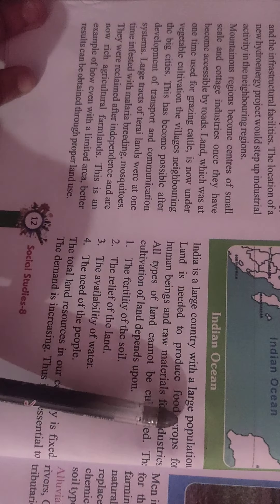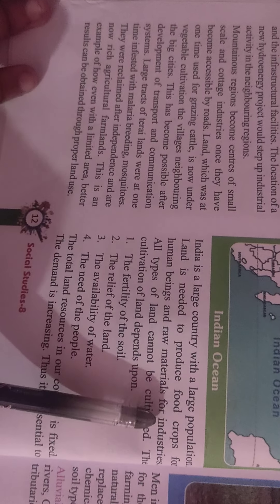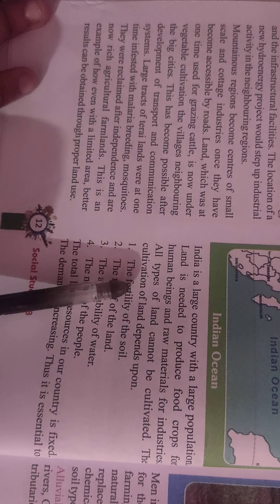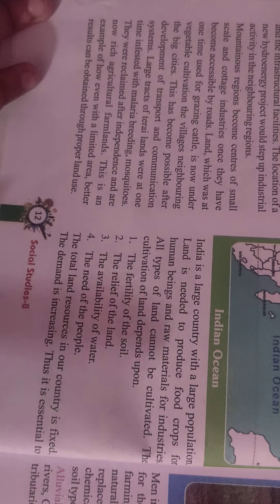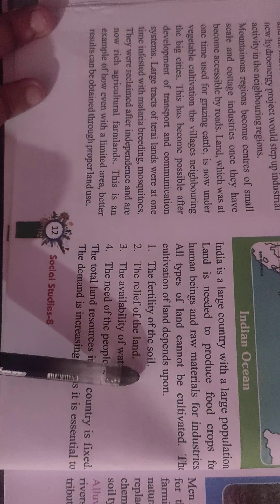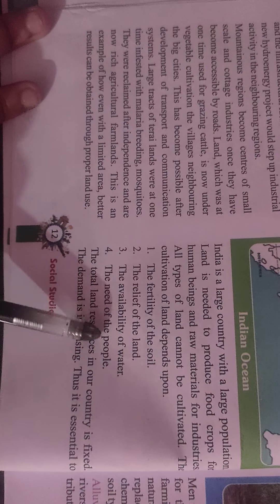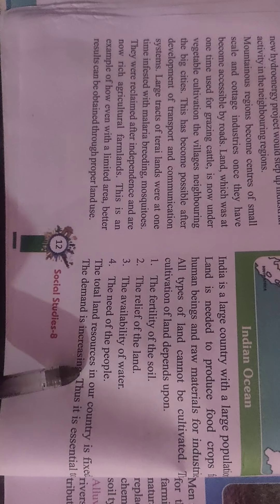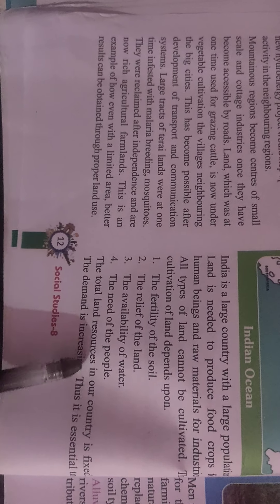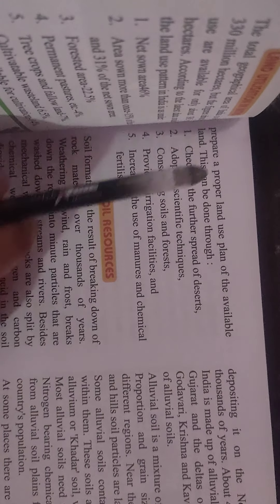India is a large country with a large population. Land is needed to produce food crops for human beings and raw materials for industries. All types of land cannot be cultivated. The cultivation of land depends upon: 1st, the fertility of the soil; 2nd, the relief of the soil; 3rd, the availability of water; and 4th, the need of the people. The total land resources of a country are fixed, the demand is increasing, thus it is essential to prepare a proper land use plan of the available land.